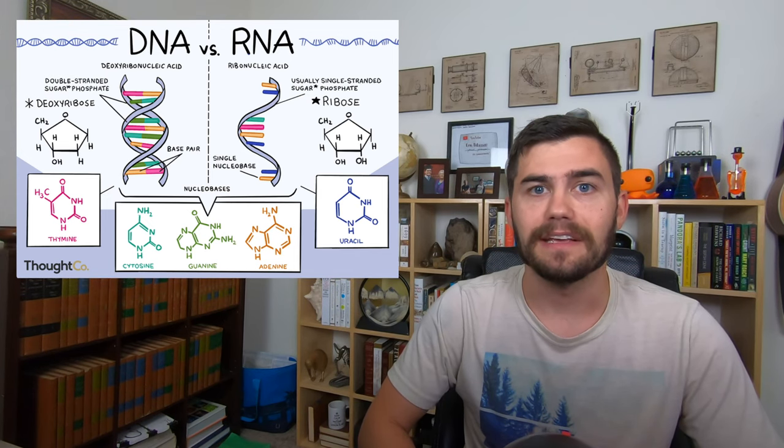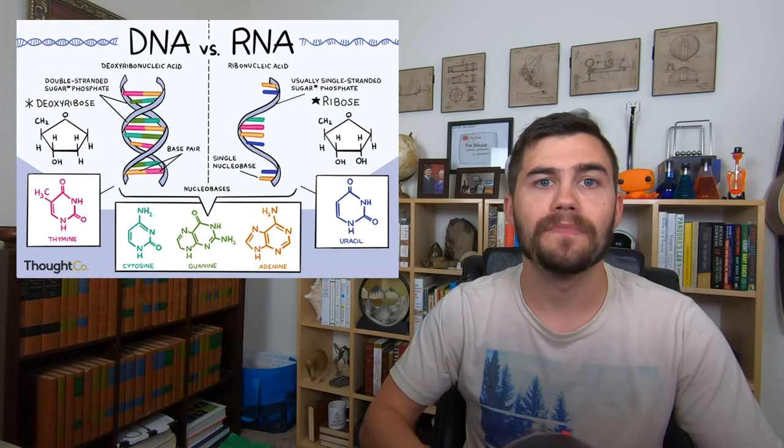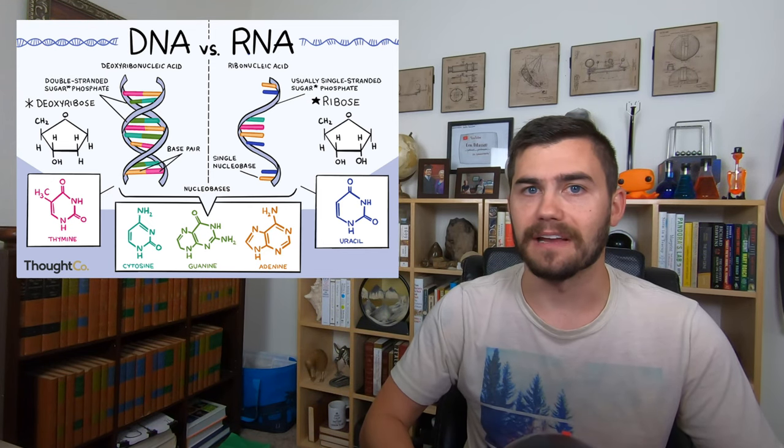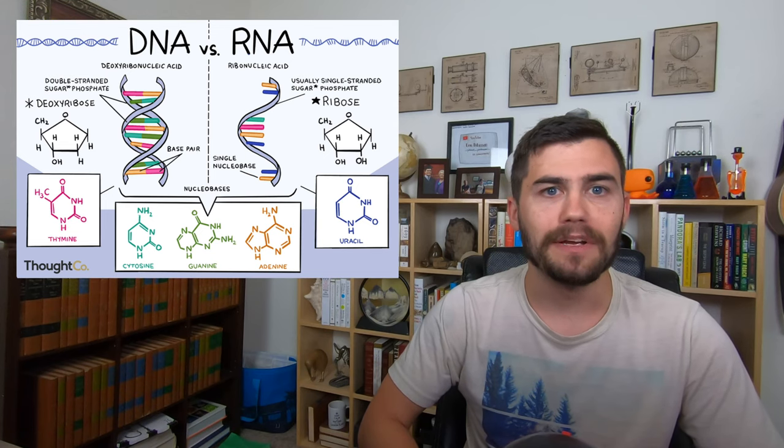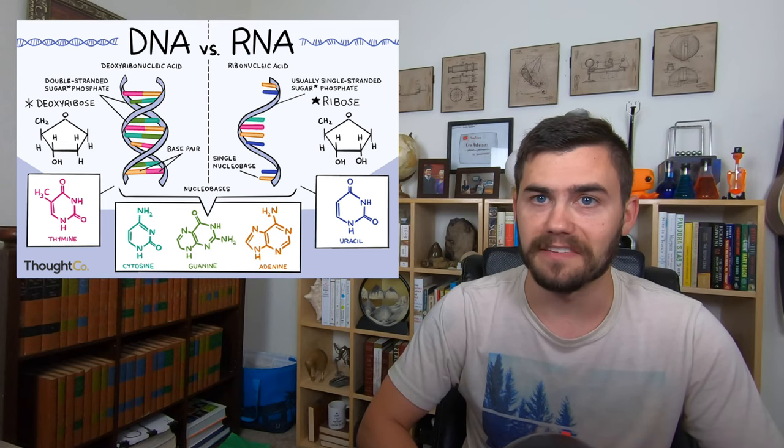RNA is single-stranded. It does not have a complementary strand opposite of it. RNA is made of nucleotides, but they're not all the same. There is no thymine in RNA. Instead, there is a nitrogenous base called uracil.